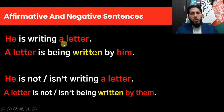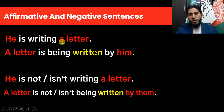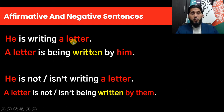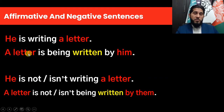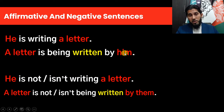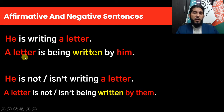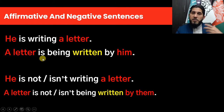Look at this example: 'He is writing a letter.' The subject of the sentence is 'he' and the object is 'a letter.' The subject is the doer of the action 'writing,' and the object is the receiver of this action. So the object of the active sentence becomes the subject of the passive sentence, and the subject of the active sentence becomes the object of the preposition. So 'he is writing a letter' becomes 'a letter is being written by him.'